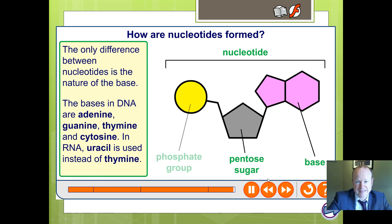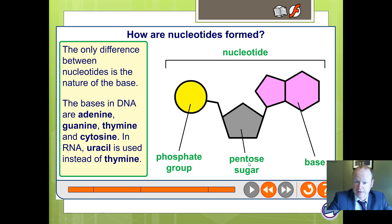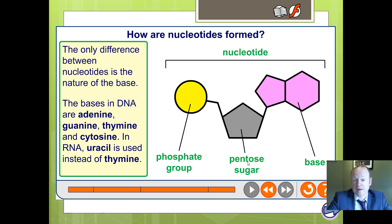You can get four different nucleotides for DNA — the only difference being which base you substitute in. The phosphate group stays the same, the pentose group stays the same — it's still deoxyribose every time — but you can exchange adenine for guanine, thymine, or cytosine. For RNA, you've got ribose instead of deoxyribose, and uracil substitutes for thymine. Other than that, the rest is the same.